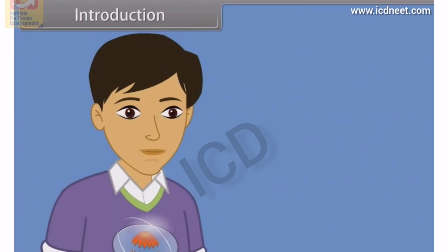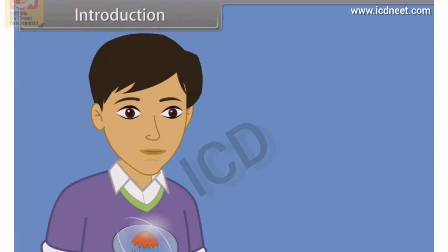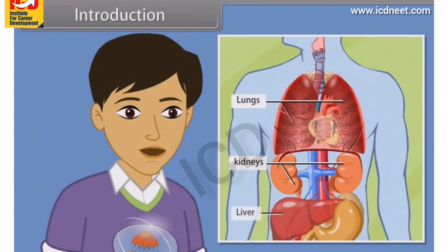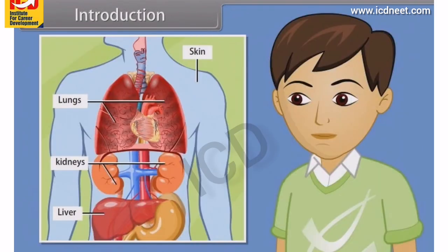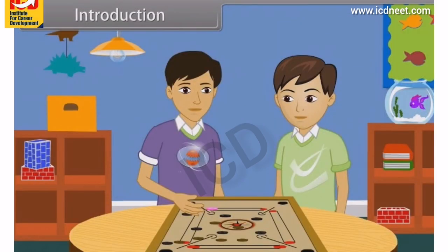This happens because of the presence of sweat glands just below the skin. With the help of sweat glands, we excrete water from the body. The major excretory organs of our body are kidneys, lungs, liver and skin. In this lesson, you will learn about excretory products and their elimination in the human body.